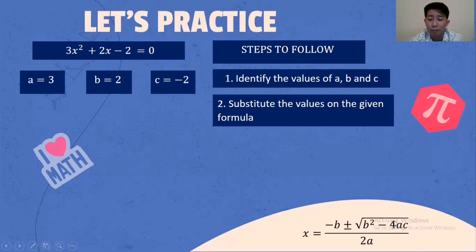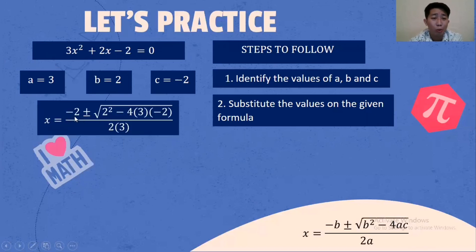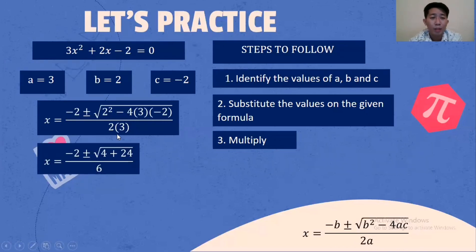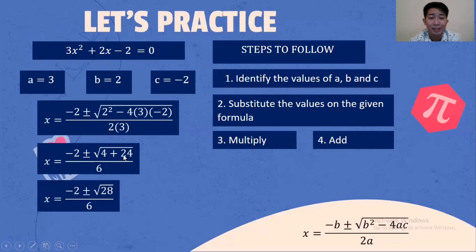Substitute the values on the formula. B is 2, A is 3, C is negative 2, A is 3. Multiply: 2 times 2 is 4. Negative 4 times 3 is negative 12, times negative 2 is positive 24. 2 times 3 is 6. Then add: 4 plus 24 is 28.